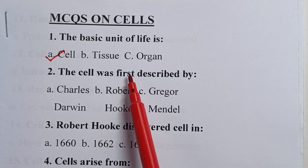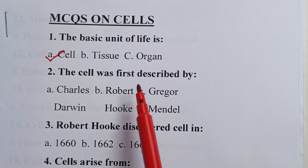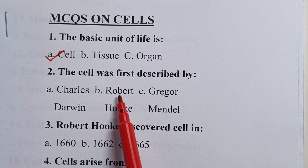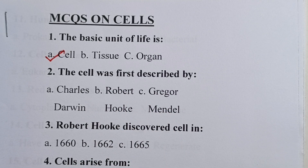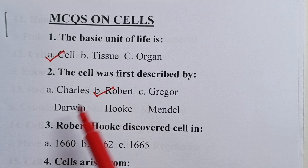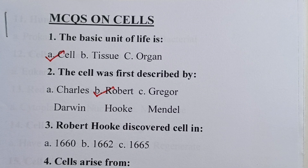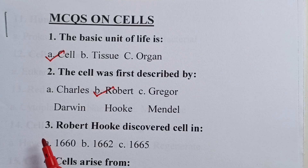Question two: the cell was first described by — is it Charles Darwin, Robert Hooke, or Gregor Mendel? The correct answer is B — the cell was first discovered by Robert Hooke.